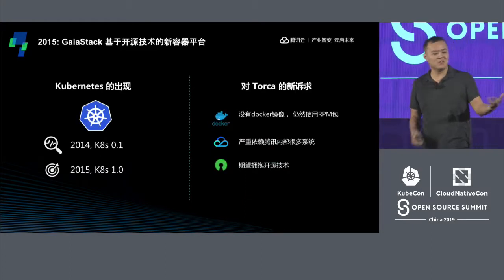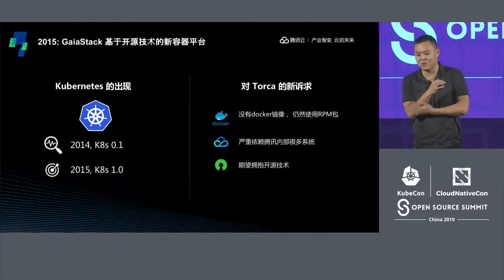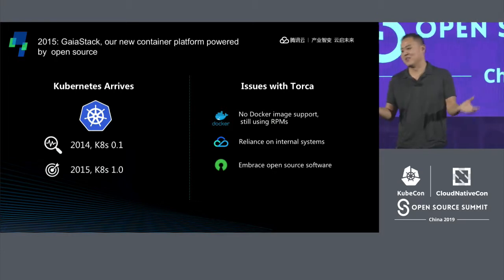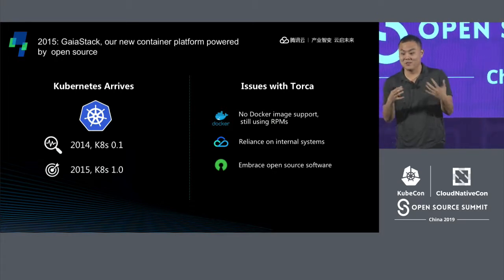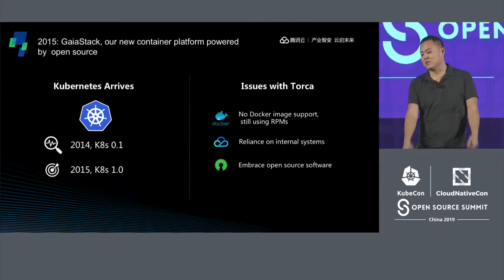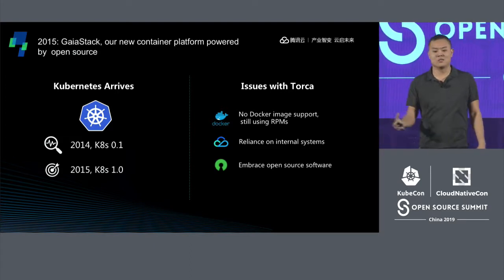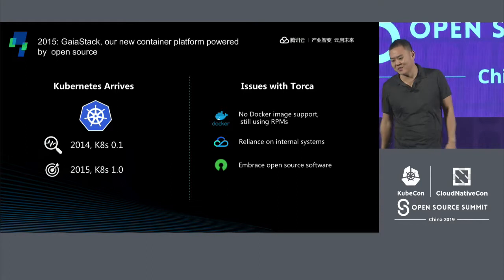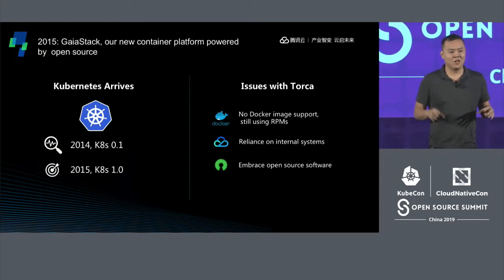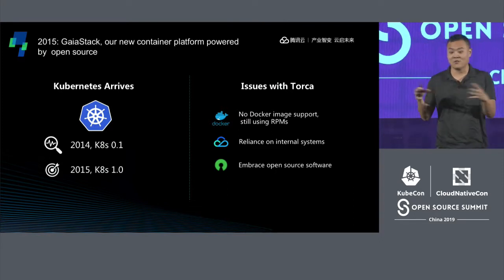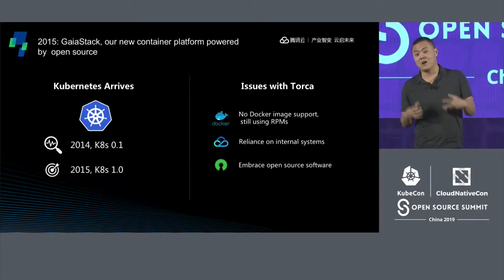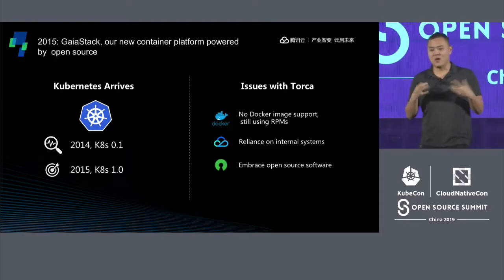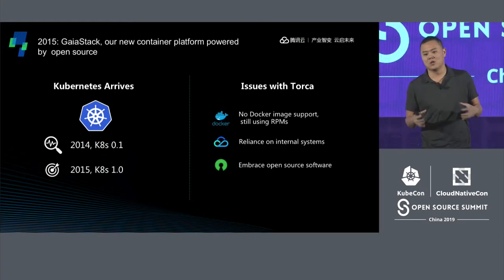In 2014 Kubernetes was first released at version 0.1. We were watching because we were very interested in open source, but 0.1 didn't have the features we wanted. So we waited until 2015 when Kubernetes turned 1.0 — a turning point for Tencent. While Torca was great, there were issues: no Docker support, painful dependency management, and Torca relied heavily on internal Tencent systems. As we moved onto the cloud and built solutions for private cloud customers, we couldn't rely on internal systems, and we wanted to embrace open source.